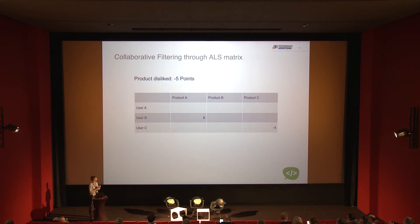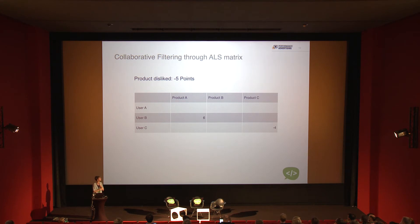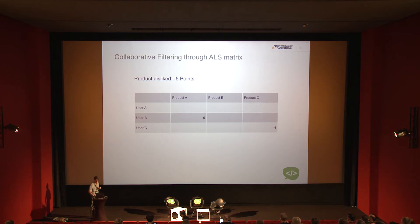What you end up with is a very large matrix — think 100,000 products and 1.5 million users. It will also have many holes, which is called a sparse matrix, because not every user has seen every product. In order to work with that better, you do the ALS — alternating least squares. How this works is you break the matrix down into two matrices: one called user features and one called product features.